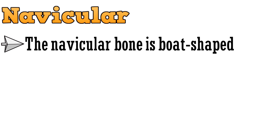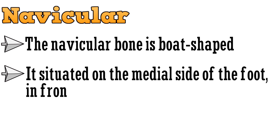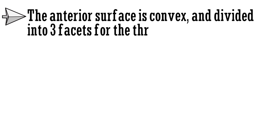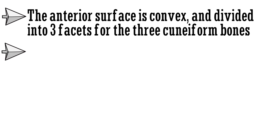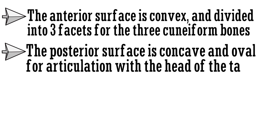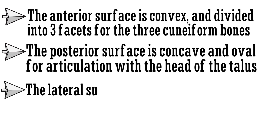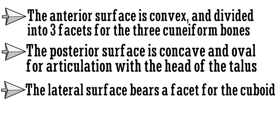The next tarsal bone is the navicular. The navicular bone is boat-shaped. It is situated on the medial side of the foot, in front of the head of the talus and behind the three cuneiform bones. The anterior surface is convex and divided into three facets for the three cuneiform bones. The posterior surface is concave and oval for articulation with the head of the talus. The lateral surface bears a facet for the cuboid bone. The medial surface has a prominent tuberosity directed downwards.